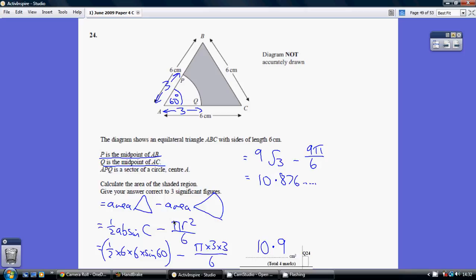Now we're taking away the area of the sector. The sector is a sixth of the area of a circle. 60 degrees is a sixth of 360.